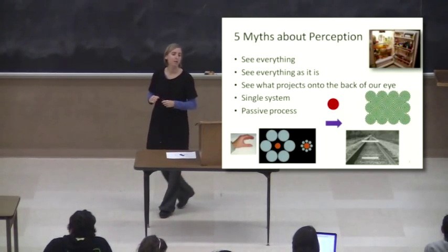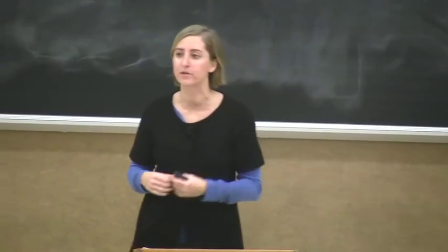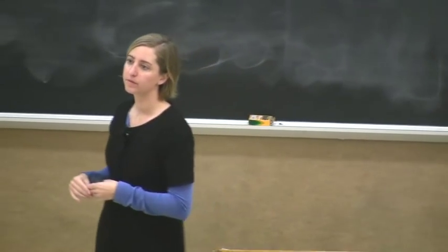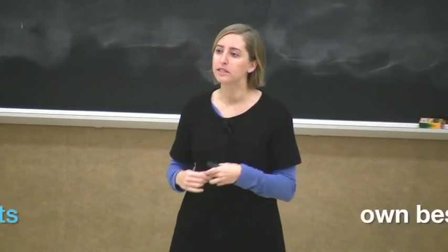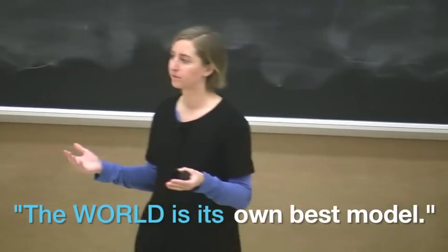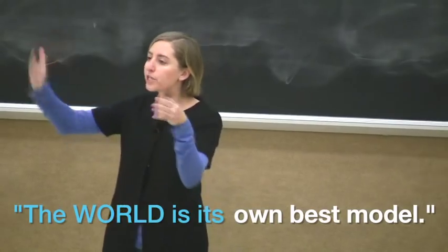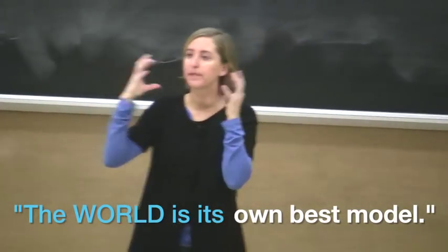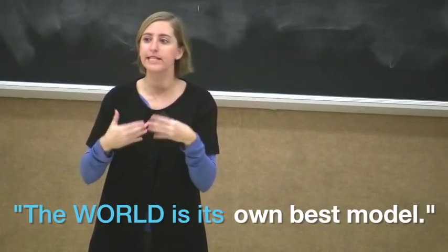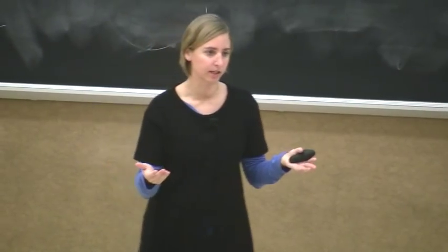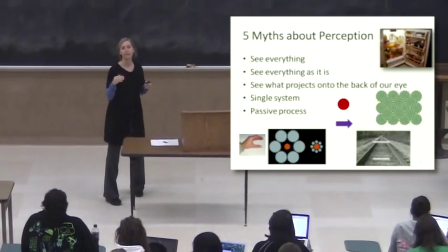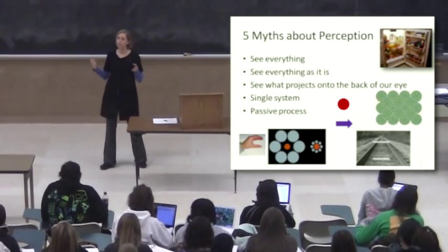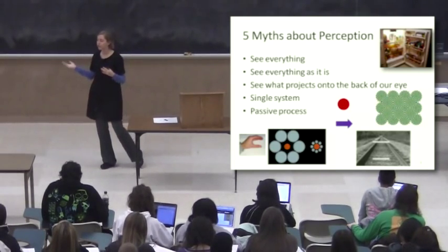And then we talked about perception as being an active process, that you go out and you seek information when you need it. And there's a saying in perception that the world is its own best model. Why recreate a complete picture in your head of something when if you need to know something, you can just go look? It's rarely the case that you're limited in what you can see. So all you need to do is when you want to go look, go look again.